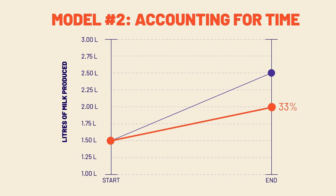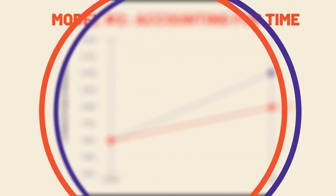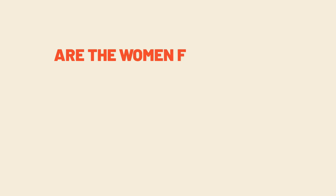This model also reveals that women are spending a lot more time on the job than they did before using the traditional techniques. Is that okay? Who gets to decide — their husbands, the researchers? Here is a clear equity issue that shows we still need another layer in the model to get more clarity.